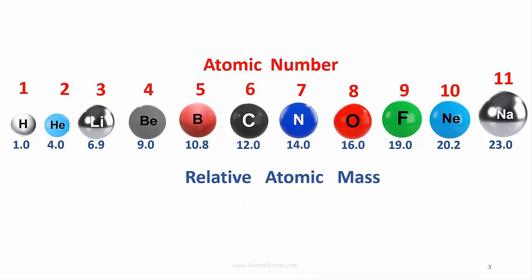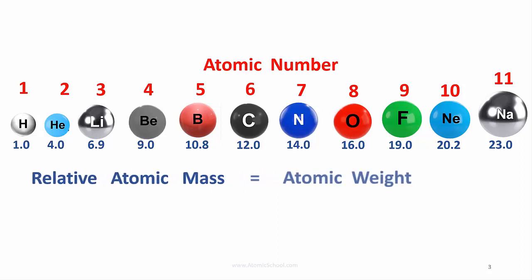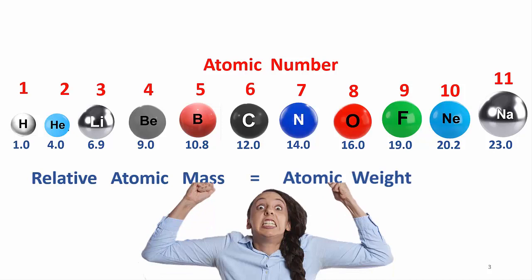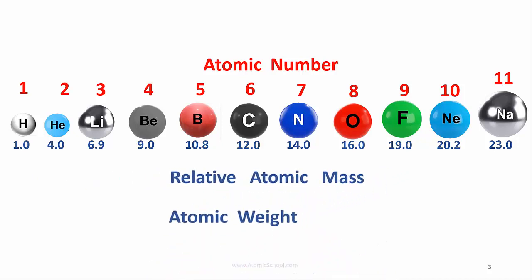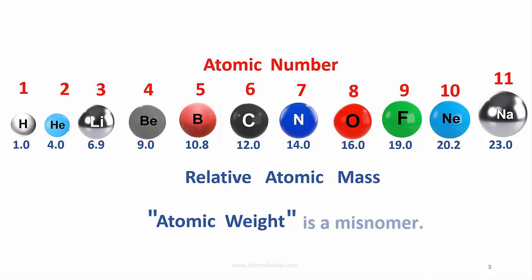And that's what's shown in the squares of your periodic table. Annoyingly, relative atomic mass is also called atomic weight, even though it's not a weight at all. And we took a whole video to explain the difference. Atomic weight is a misnomer. That means its name is inaccurate.